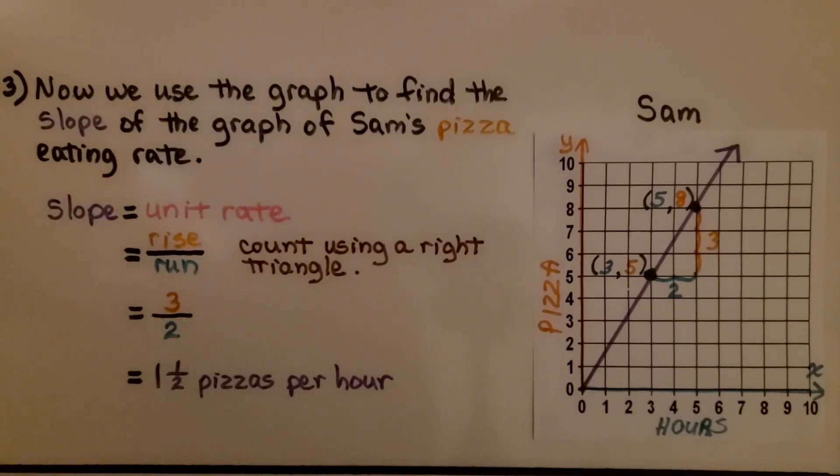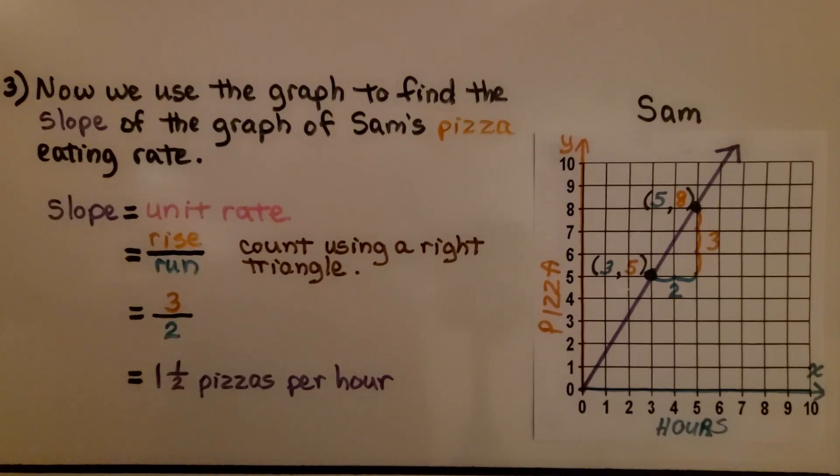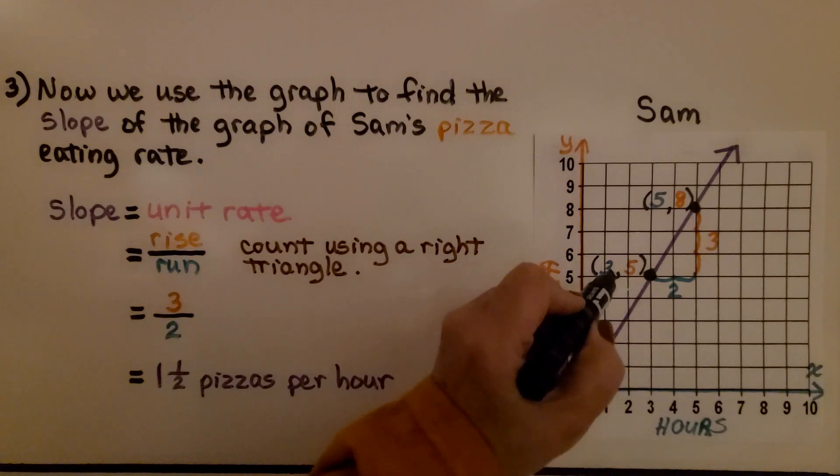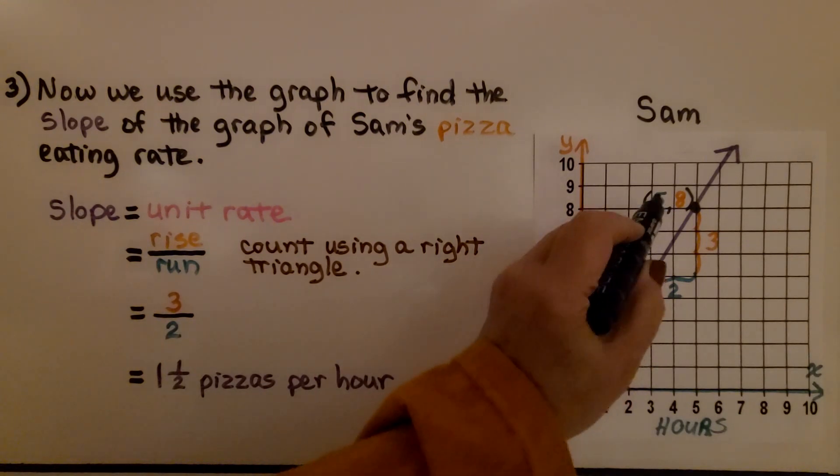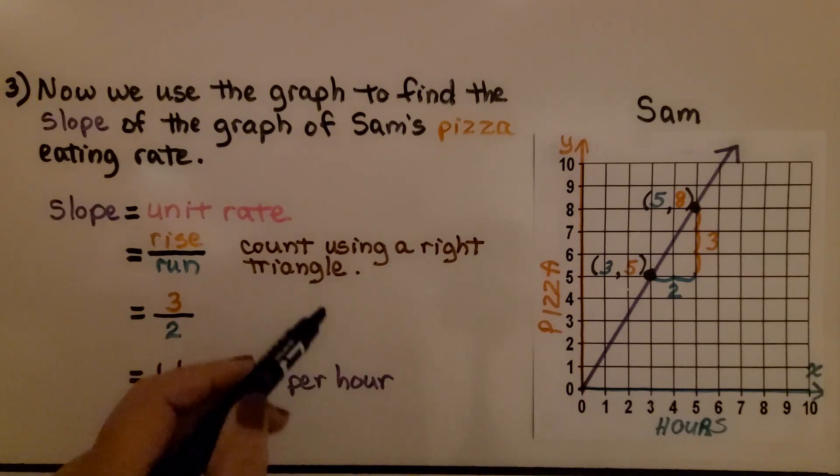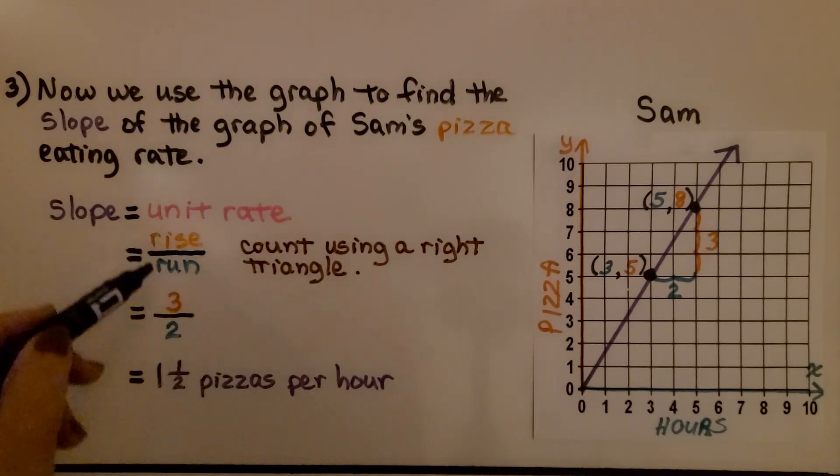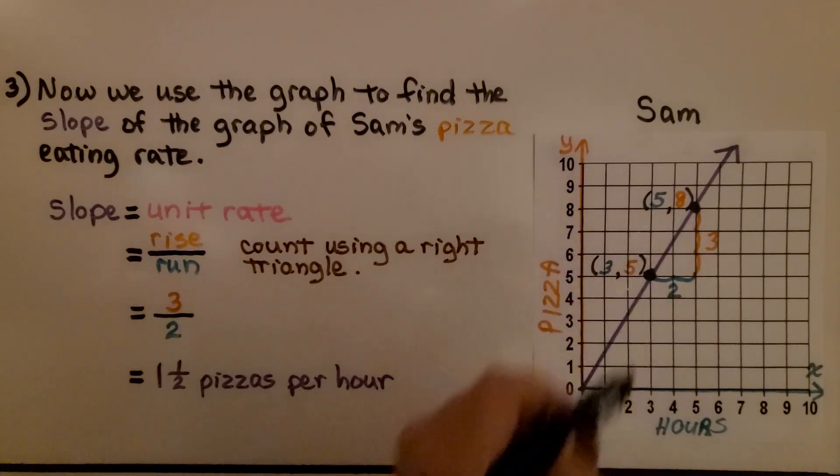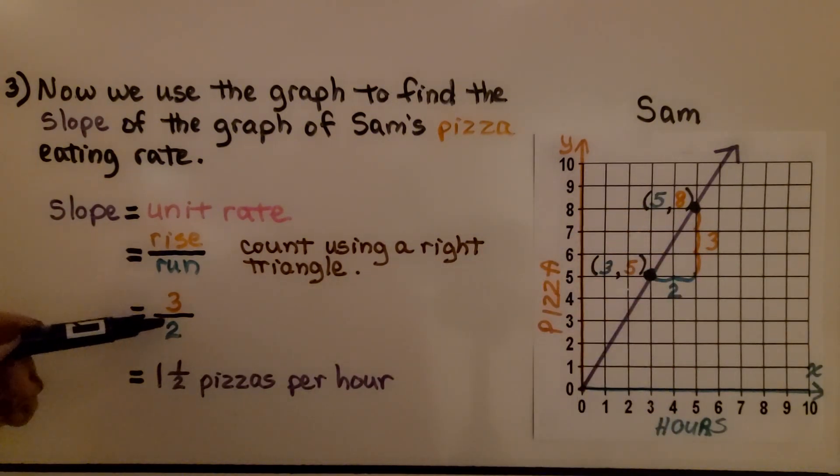We use the graph to find the slope of the graph of Sam's pizza eating rate. We had the points 3 for x, 5 for y, and 5 for x, 8 for y. We can use a right triangle to count the rise over run. We've got a rise of 3 units and a run of 2 units. We have 3 halves. When we simplify that, it comes out to 1 and a half pizzas per hour.